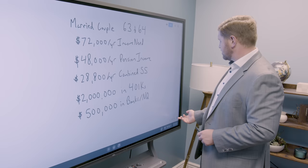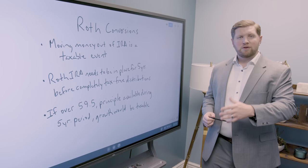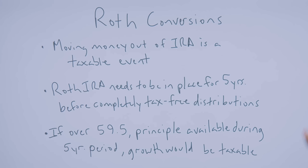So as we look at Roth conversions, we need to obviously evaluate for this situation if that's a good decision or not. But Roth conversions, we need to know moving money out of an IRA or a 401k is a taxable event. So whatever dollars come out are going to be taxable in that tax year, and they're going to go on top of any other income. So in this situation, it's going to go on top of their social security and their pension income, and they'll be taxed at the top tax rate for this conversion.